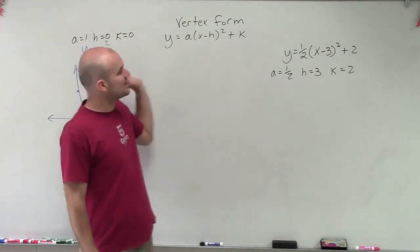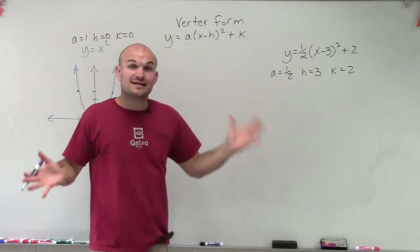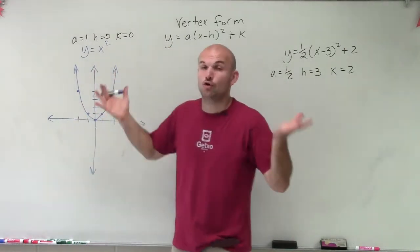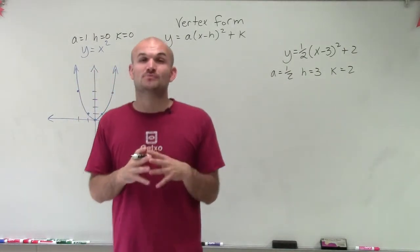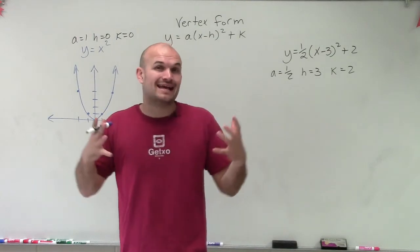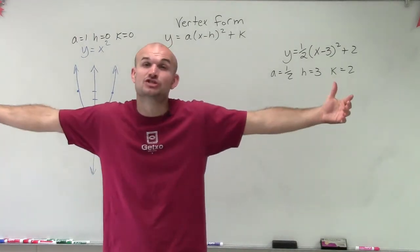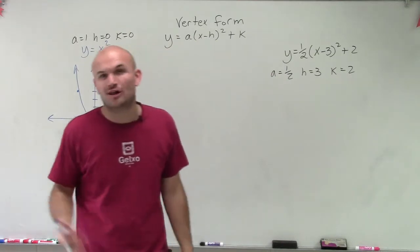So by applying now, when I'm going to transform from a equals 1 to 1/2, it's still going to be positive. So my graph is still going to open upwards. But now, since I'm multiplying by 1/2, or the absolute value of my a is less than 1, my graph is going to be stretched horizontally. Sometimes we call it fatter.